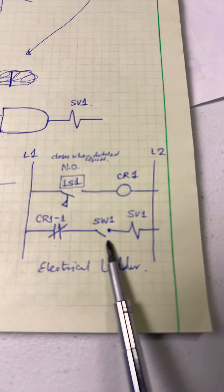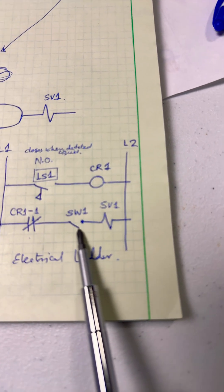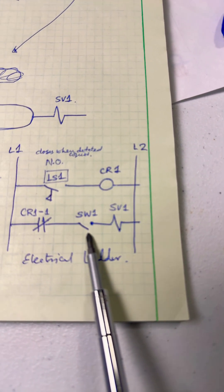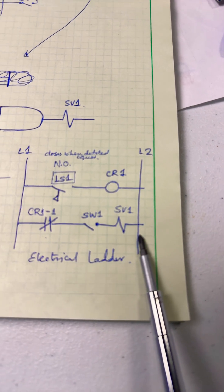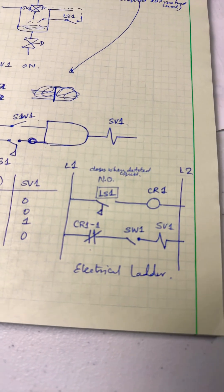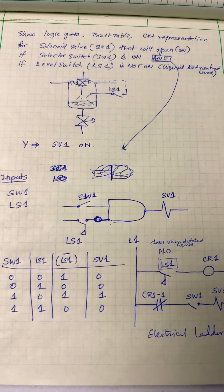In series with the selector switch will turn on the output Y1. This is how NOT gates are used.